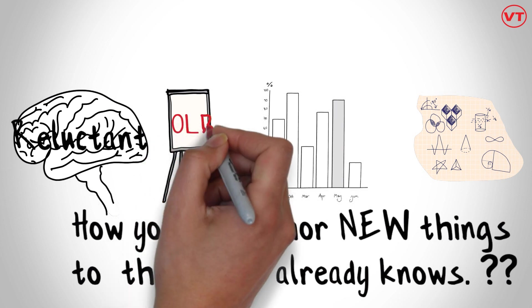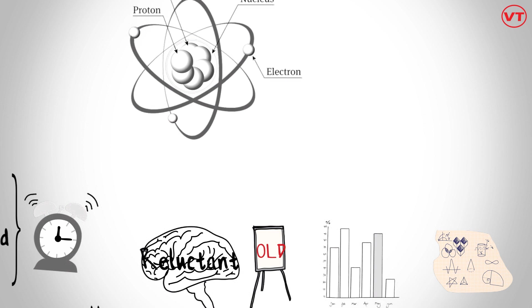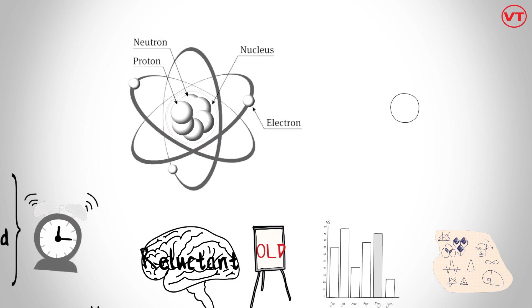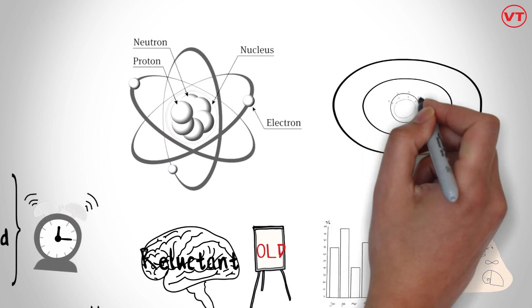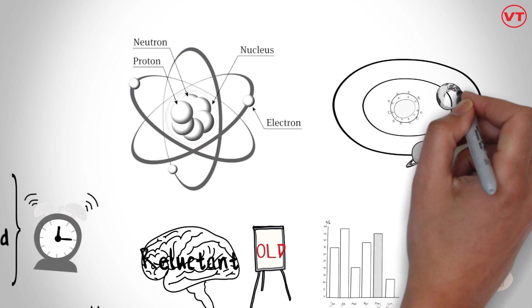One great example of this is the structure of atom. Everyone knows how the structure of atom is anchored in our brain by our school teacher. Remember that familiar example of celestial arrangement of planets where nucleus is at the center equivalent to sun in the galaxy, and all the electrons are revolving around it like the planets revolve around the sun.